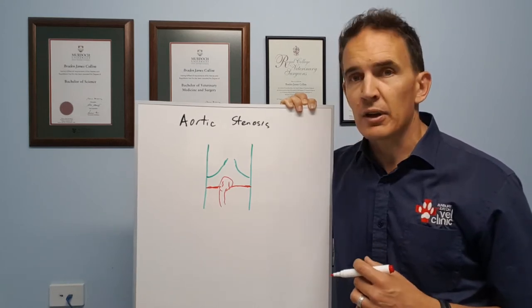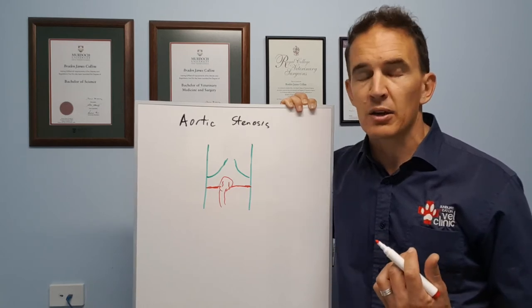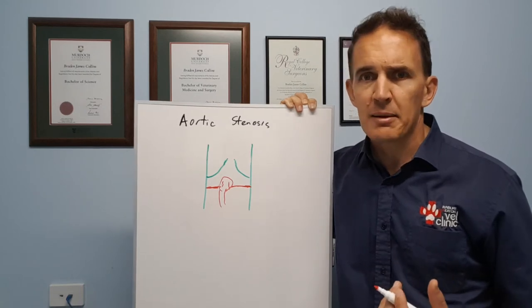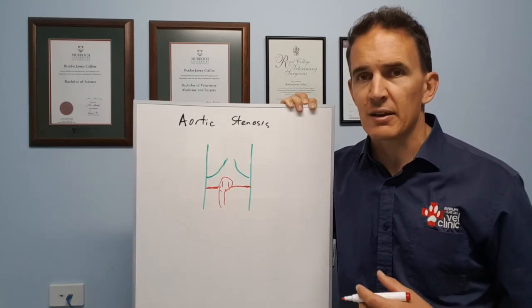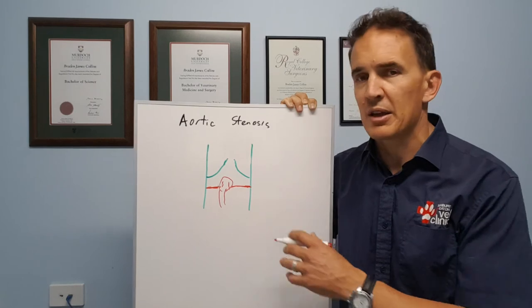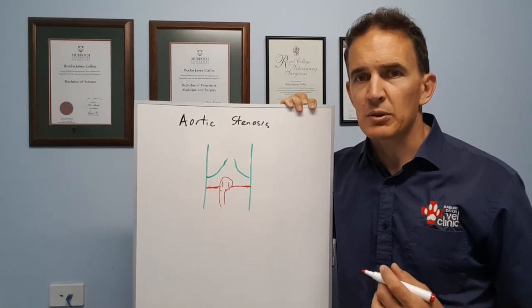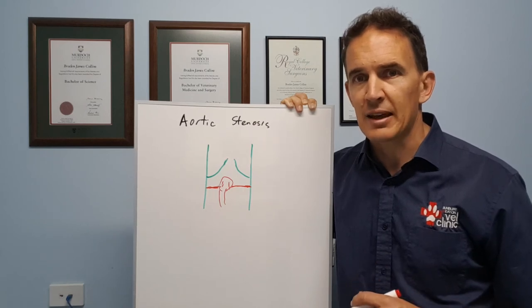If you're concerned about your dog, signs you might notice: they don't have a lot of exercise tolerance, they become puffed, they collapse with exercise, anything like that needs a vet to examine them quite quickly because this may be the underlying cause in a young dog. But there are plenty of other things that could be as well, so your vet's the best person to investigate that.